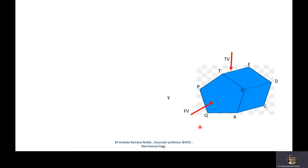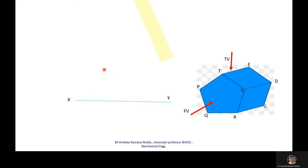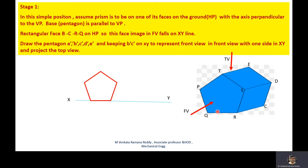In Stage 1, assume the axis is perpendicular to the VP. As a first step, draw the XY line. Since the prism is resting on its rectangular face BC and RQ on the HP, its image falls on the XY line. In the front view, we see the full image of pentagon PQRST. The ABCDE base is invisible — perfectly hidden by the PQRST base. Draw the pentagonal prism in the front view. Because face PQCB is on the HP, its image is on the XY line.